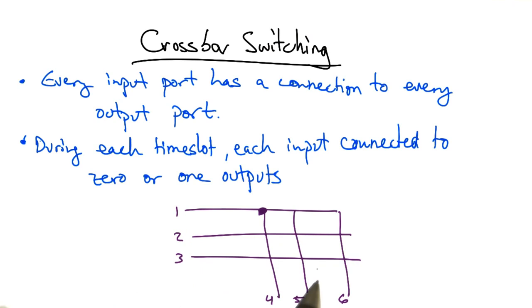The crossbar is often depicted as follows. If one wants to send to 4, we could connect the input to the output in that time slot, and now this row and this column is occupied.